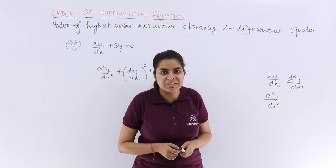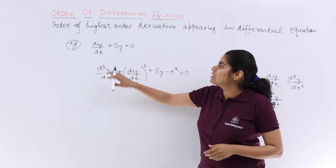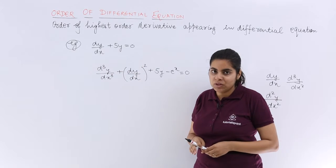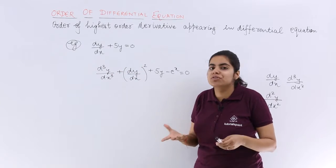What I mean to say, let's see with the help of examples. So the first example is dy/dx + 5y = 0. So how many differential coefficients are there?